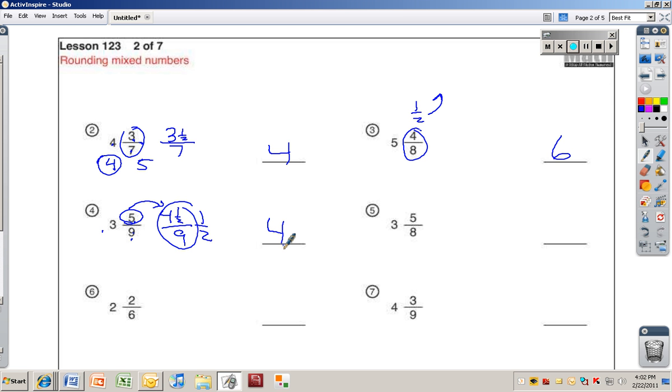Okay, 5 eighths. Do you think 5 eighths is smaller or bigger than a half? Bigger. It's definitely bigger because if it was 4, it would be a half, right? And 5 is bigger than 4. So what am I going to do with the 3? Make it a? Rounded 4. Rounded up to a 4.